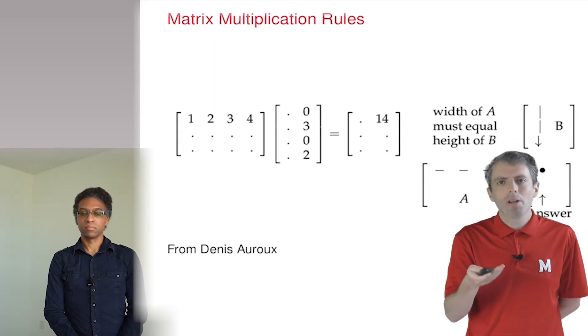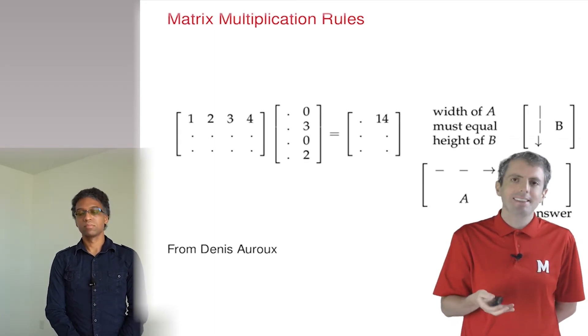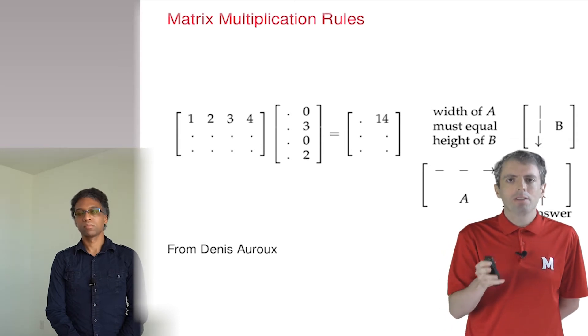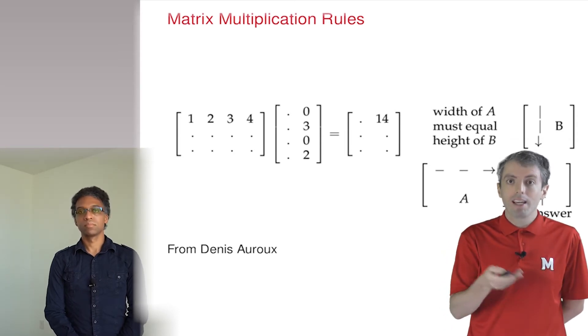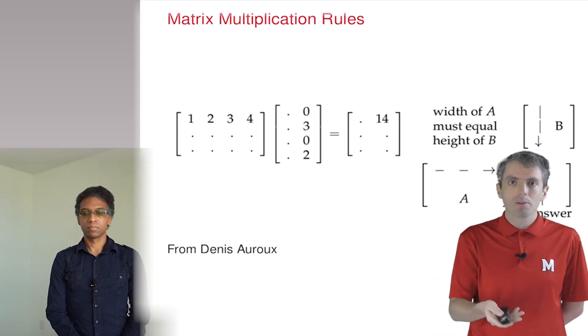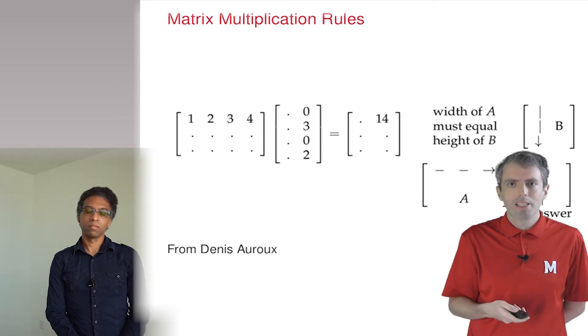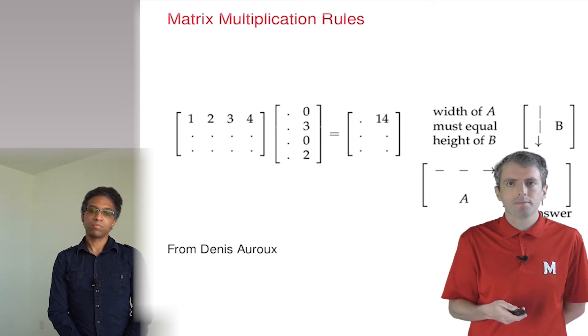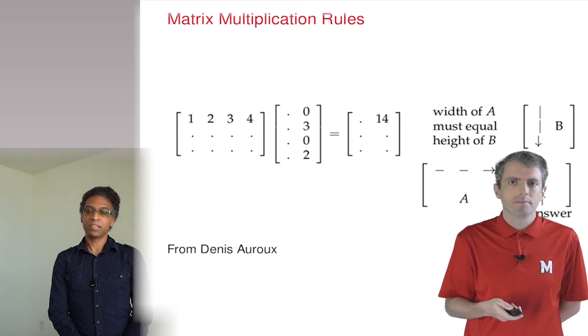Ah, so the result is a one-by-one matrix in the end. I see. So in general, when you multiply two matrices, one of which is A by B and the other one is C by D, B and C have to be the same. Exactly. And the result will be an A by D matrix.